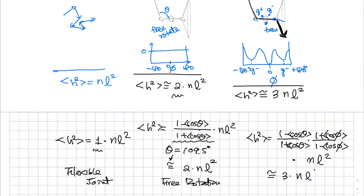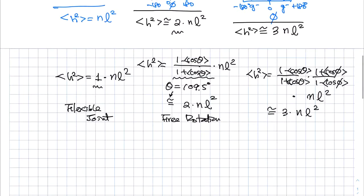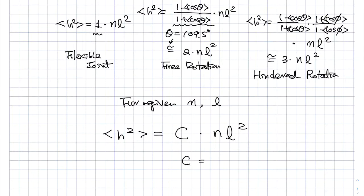And so that's about three times N L square. So now you can see that whether this is a hindered rotation. So for a given, for a given number of bonds and the fixed length of the bond length, you can see that end to end distance looks like proportional to a constant times N L square. And whether C, as you know, C is one for freely joint, universal joint model. C is about two for free rotation, fixed bond angle. And then it's about three for the hindered rotation. C is about three for the hindered rotation.